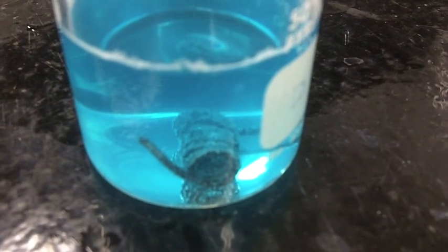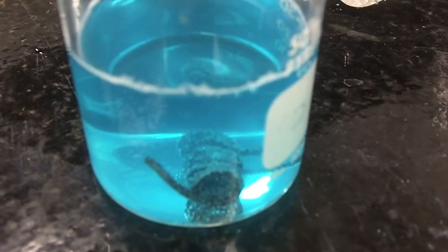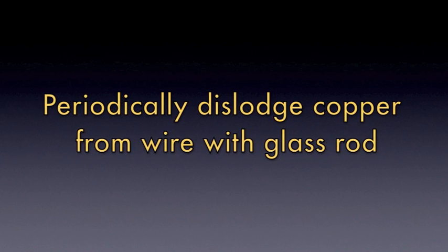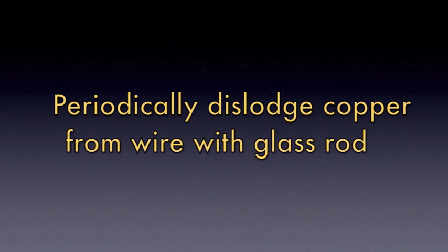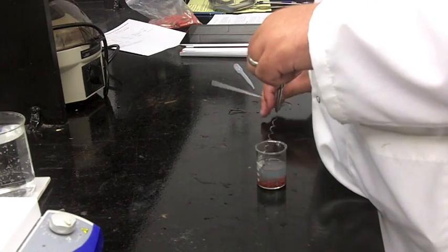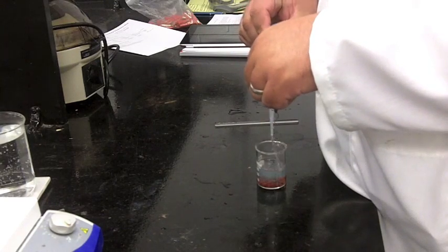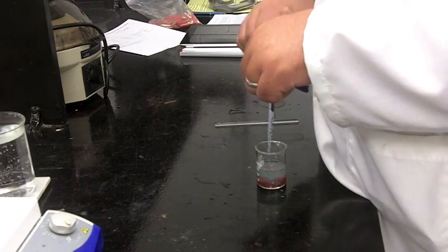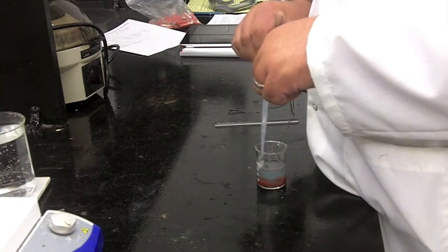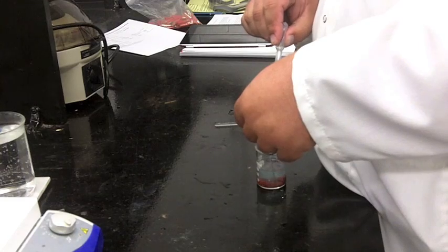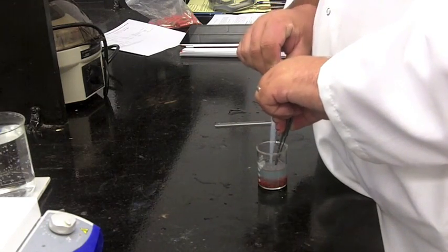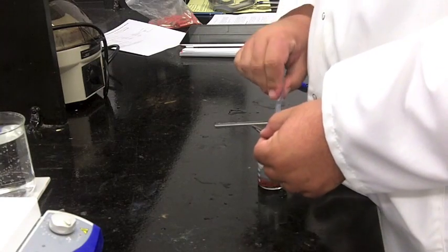You should start to see some bubbling right away. To ensure the reaction goes all the way, periodically knock the solid copper off of the wire with your glass rod to keep exposing new wire surface. Observe what's happening to the solution too — eventually the bubbling will subside and the solution will look less blue. Remove the aluminum wire, stretching it out with two pairs of tweezers. Use a squirt bottle or dropper to clean it off. If your solution looks a little cloudy, add a few drops of hydrochloric acid — it helps with filtration by removing aluminum salts.